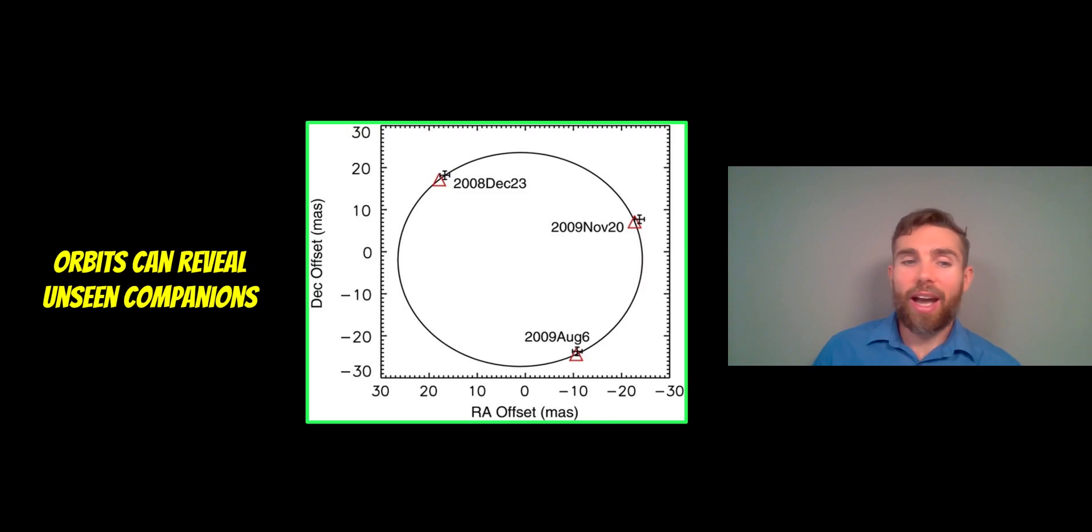And it could show an unseen companion. So it could be that it's orbiting an object that we can't see. So it could be a dense, quite dim object. So maybe a neutron star, a white dwarf, maybe even a planet actually. We could have an unseen planet. And some exoplanets have been discovered using this method. Because you've got another object there that they are orbiting a common center of mass, we can detect it by looking at the position over time using our astrometry.